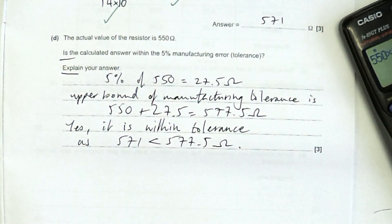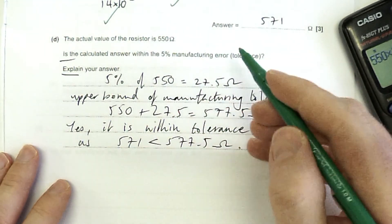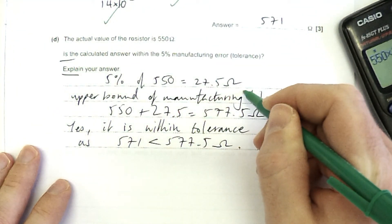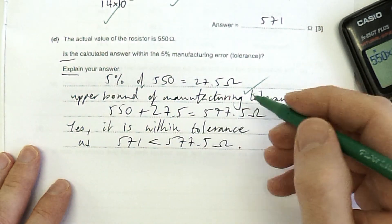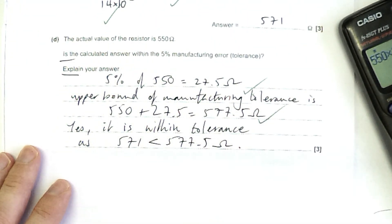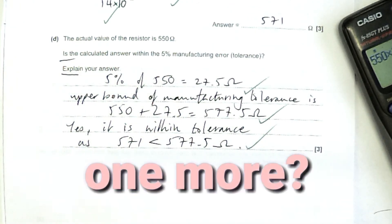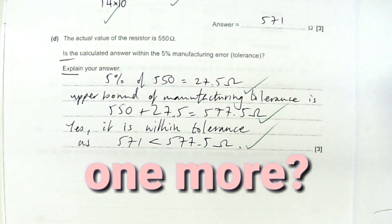I hope that one makes sense. It's a pretty straightforward one, really. Firstly, mark for 5% of 550. Secondly, the maximum possible. And lastly, yes, because it lies within that range. Or yes, because it's less than 577.5.